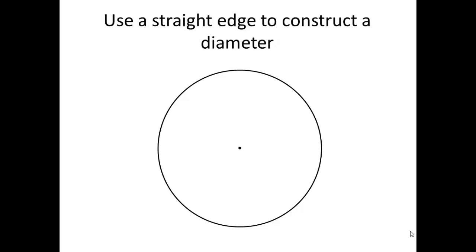Use your straight edge to construct a diameter. A diameter is a segment that goes through the center, and it touches both sides of the circle like this. Make sure that line is very light. Be gentle with your pencil.